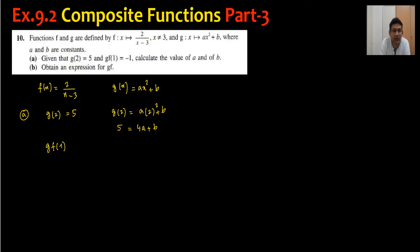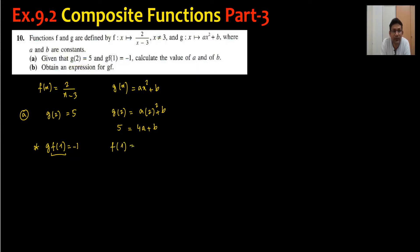The second condition is g of f(1) equals minus 1. As I explained in the last video, there are two possibilities. I can find f(1) first. Substituting into f(x): f of 1 equals 2 upon 1 minus 3, which is 2 upon minus 2, so f of 1 equals minus 1.